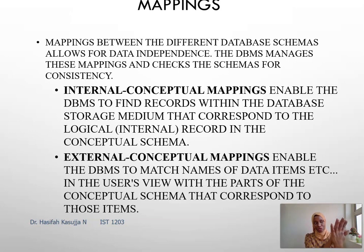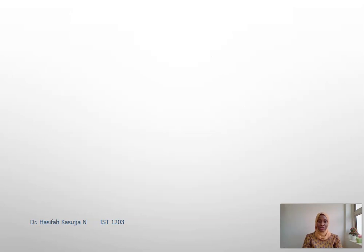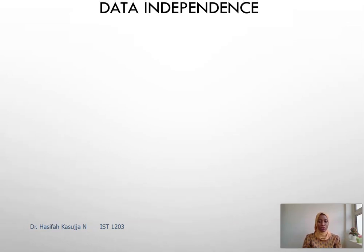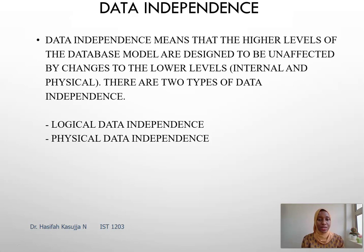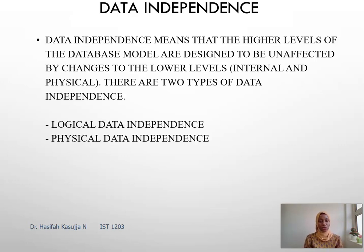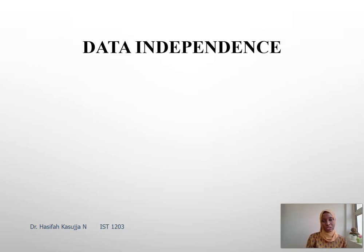So this is what we call mapping. You can use this analogy to understand the concept of mapping in databases. Then we go to data independence. With data independence, we also have two levels: physical data independence and logical data independence. Data independence essentially tries to establish immunity of the different levels of the ANSI SPARC should there be any changes in the lower levels.